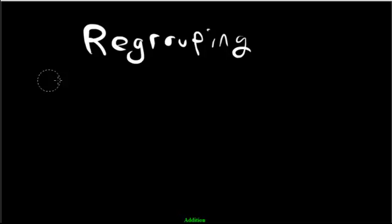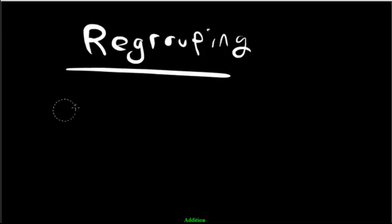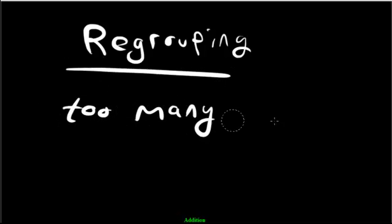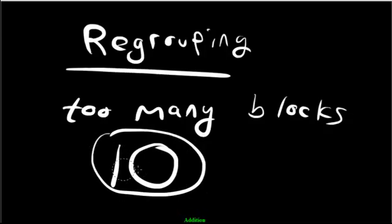Here's another word we have to get comfortable with — it's called regrouping. Everyone say it together: regrouping. What it means is whenever you have too many blocks, you have to regroup them together. So how many is too many? Everyone hold up 10 fingers. That's too many blocks — 10 fingers, 10 blocks, 10 anything. That's too many blocks, and we're going to see what that means once we do an example. So regrouping is when you have too many blocks. How many is too many? 10 is too many. If you have 10 or more, that's too many blocks.